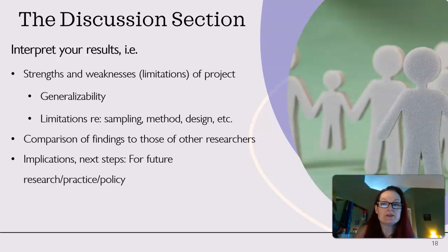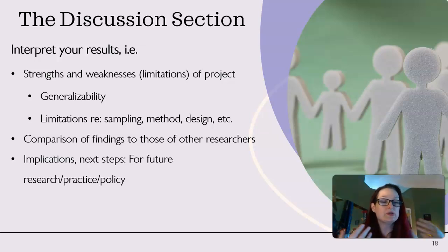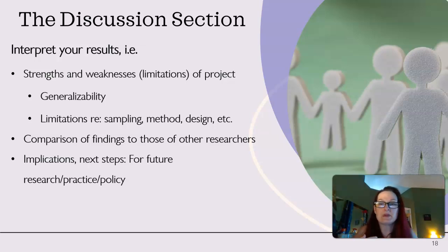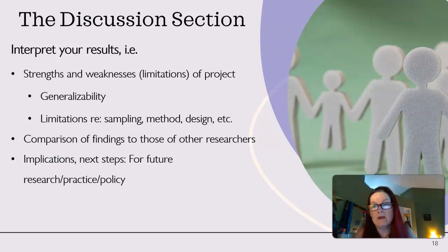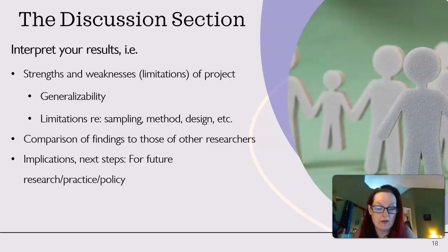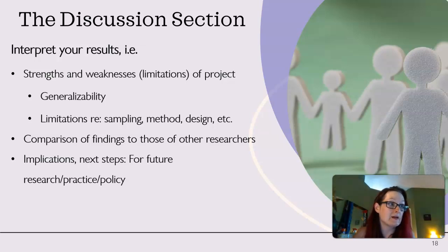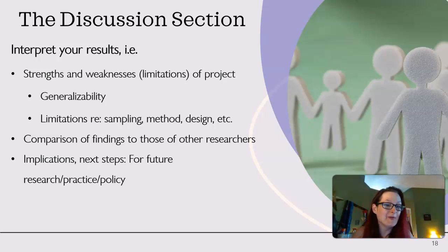You can also talk in this part about strengths and weaknesses, or limitations of your project. Sometimes that means it's not generalizable to everyone because of sampling issues. Sometimes it has to do with methodology or design. A lot of times it's sample size. But think about the limits, because we want to indicate our level of confidence with what we've found. We don't want people making sweeping practice or policy changes if the evidence is not super strong or if there are significant limitations — if you've had a sample size of 10 people, we're not going to change nationwide policy based on that.